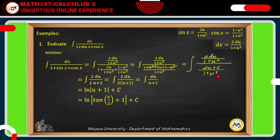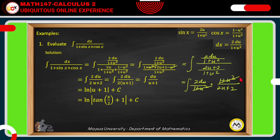Writing the integrand as a product of the numerator 2 du over 1 plus u squared times the reciprocal of the denominator, which is 1 plus u squared over 2u plus 2: since 1 plus u squared is common, we cancel it out, giving 2 du over 2u plus 2. Factoring out 2 from the denominator gives u plus 1, and since 2 is common in both numerator and denominator, we cancel to get the integral of du over u plus 1.